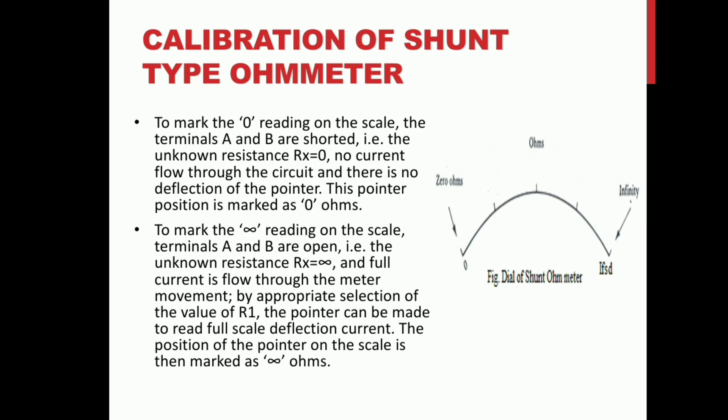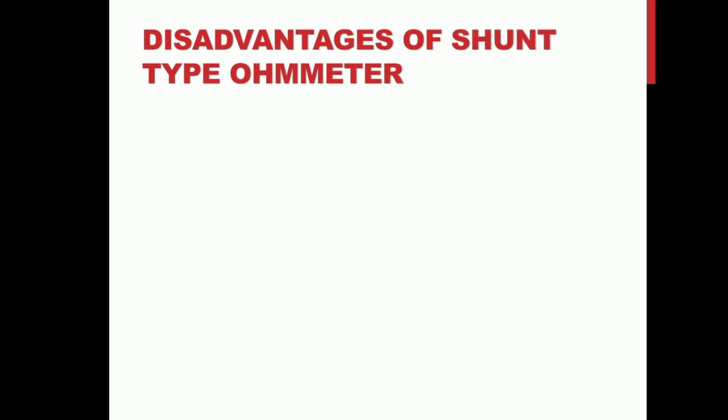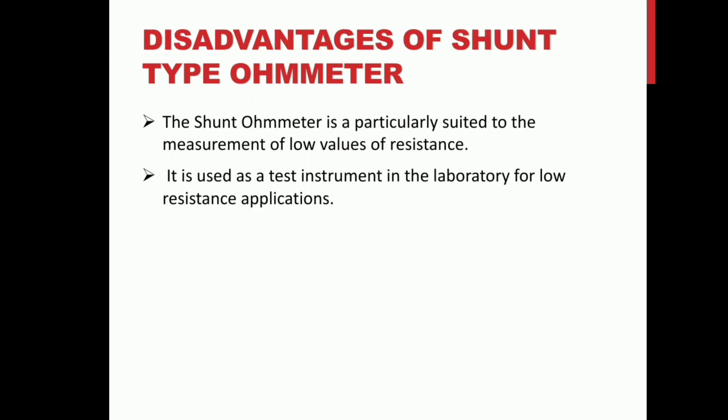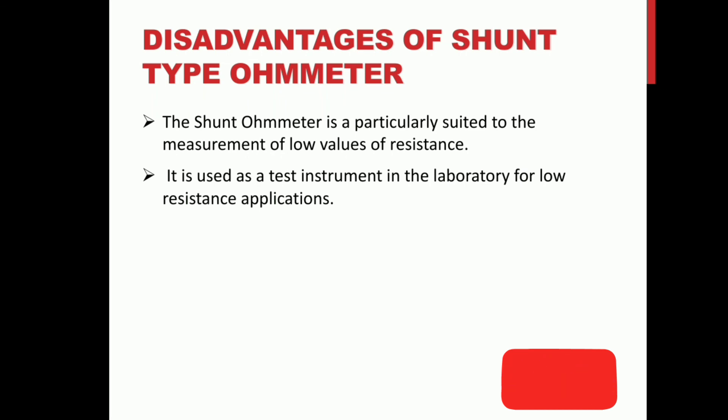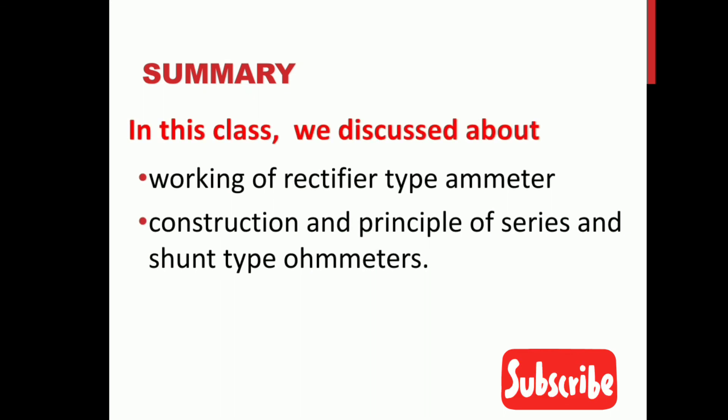In the shunt-type ohmmeter, unknown resistance Rx equal to 0 means current is at infinity, and infinity ohms means current is 0. The shunt-type ohmmeter is particularly suited to measurement of low resistance. It is used as a test instrument in the laboratory for low resistance applications.